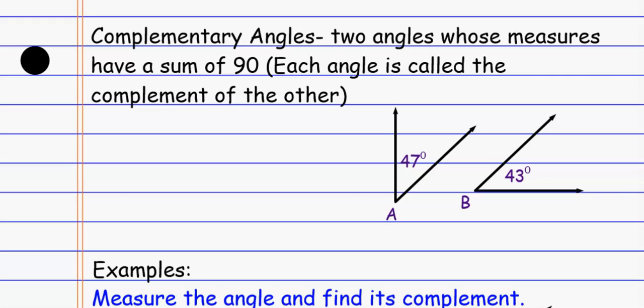And so when you look at this, we can determine if A and B are complementary angles simply by adding them up. If I were to take the 47 and add up the 43, they add up to 90 degrees.